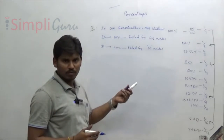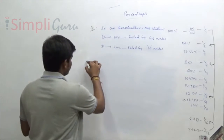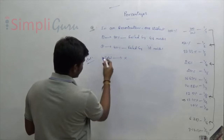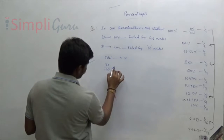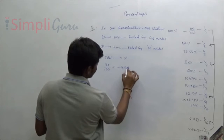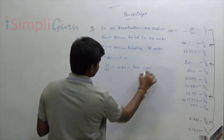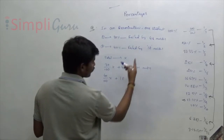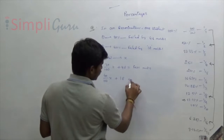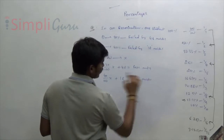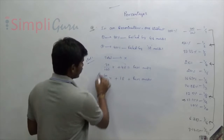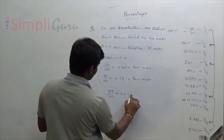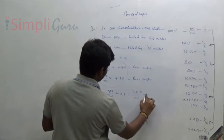Using the normal procedure, take total marks as X. One who got 30% means 30% of X; he failed by 48, so adding 48 gives pass mark: 30X/100 + 48 = pass mark. Another got 40% and failed by 18, so 40X/100 + 18 = pass mark. Equating: 30X/100 + 48 = 40X/100 + 18.